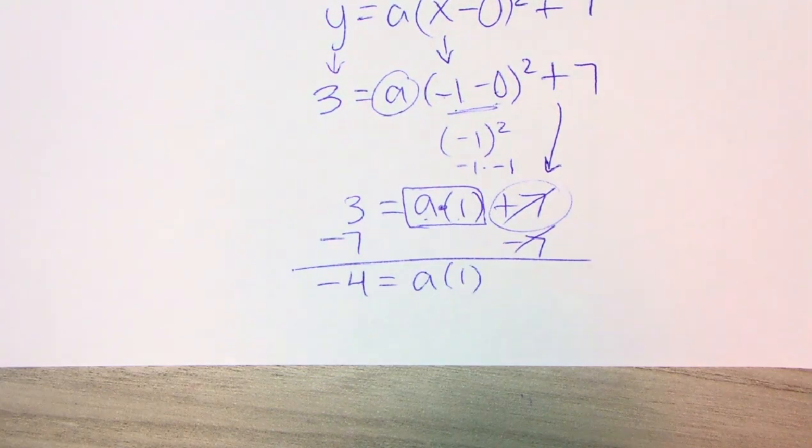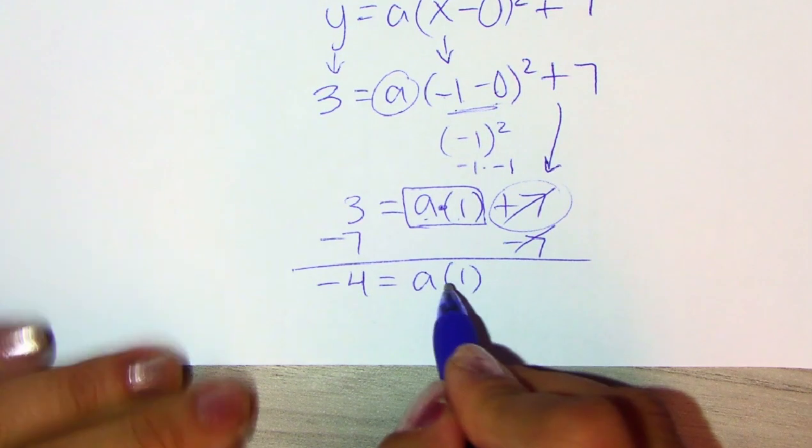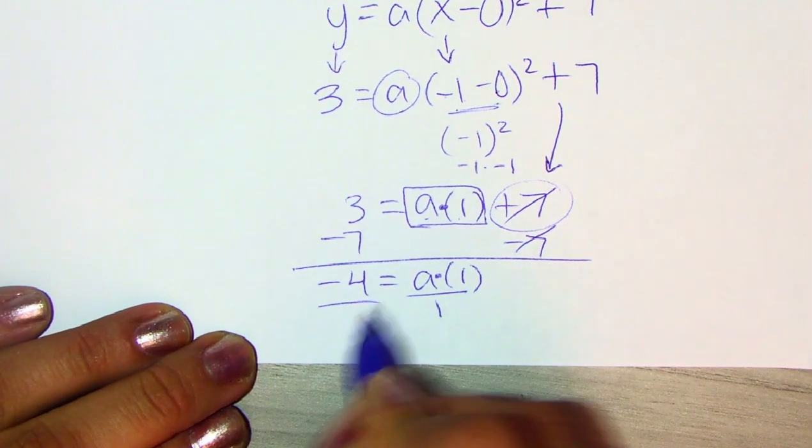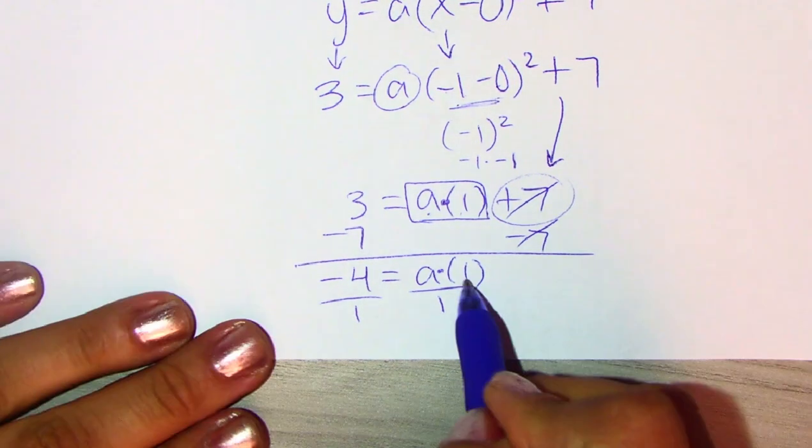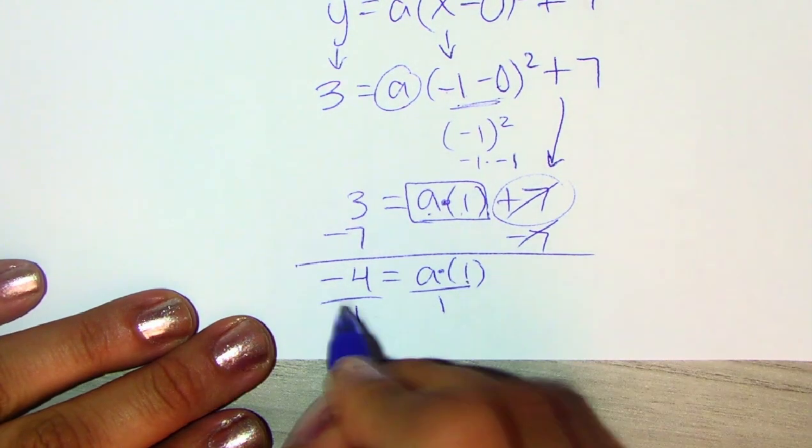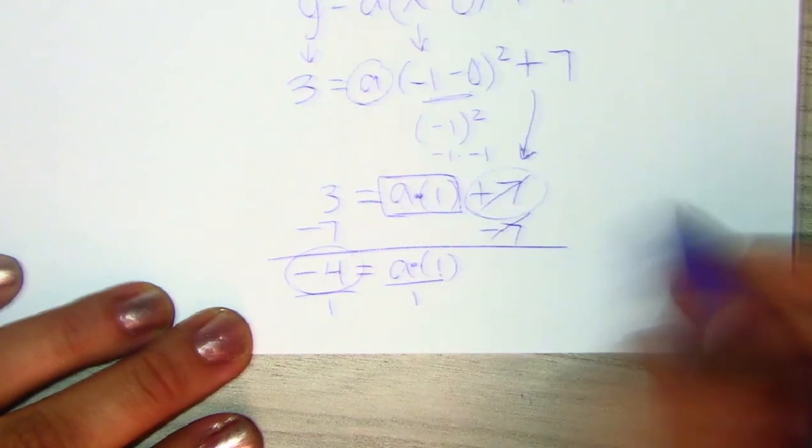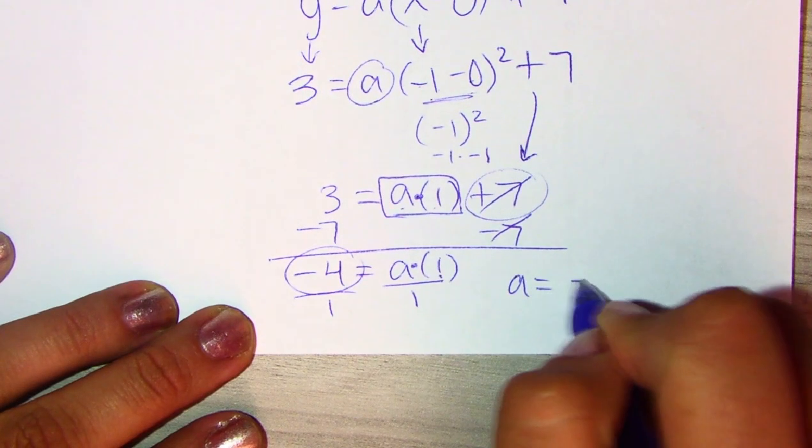And then, usually, if there's a number next to A, it's like a multiplication that we need to divide by. So, if you want to go ahead and divide by 1, go ahead. But, technically, when it's a 1, it's just dividing by 1, and it results in the same answer. So, negative 4 is your A value.